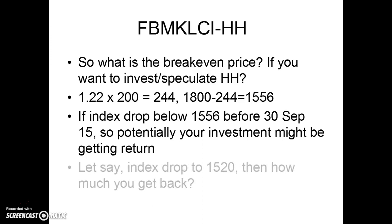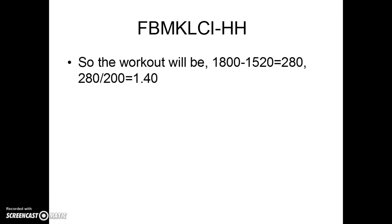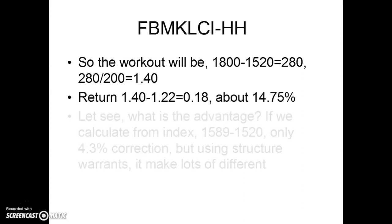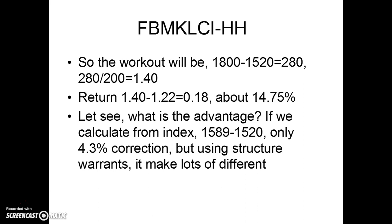Let's say the index drops to 1520. The calculation is: 1800 minus 1520 equals 280, divided by 200 equals 1.40. The return is about 18 cents per share, which is about 14.75 percent. From index 1589 to 1520, that is only a 4.3 percent correction, but using structural warrants it makes a lot of difference — you get 14.75 percent return.